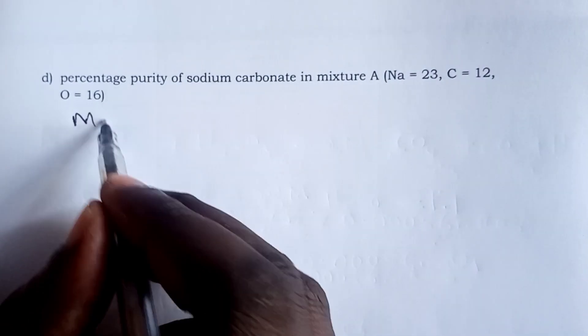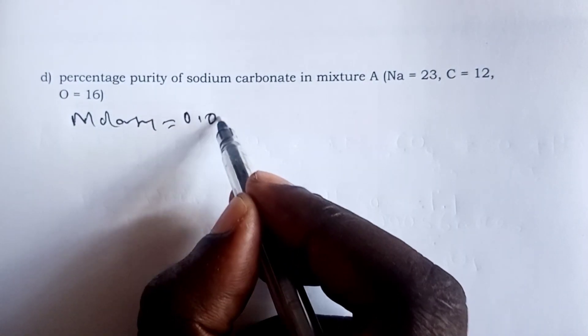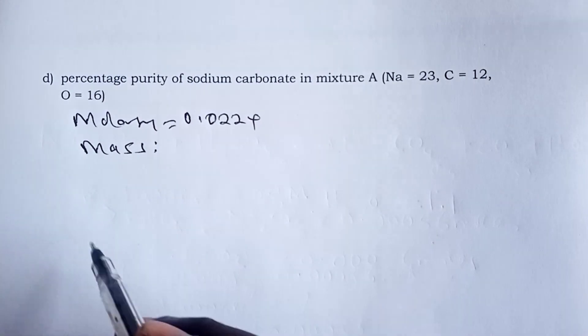To the next page, we are being asked to find the percentage purity of sodium carbonate in mixture A. Molarity, we have been able to get 0.0224. So for us to get the percentage purity, we need the mass, mass of the sodium carbonate that was in the mixture.